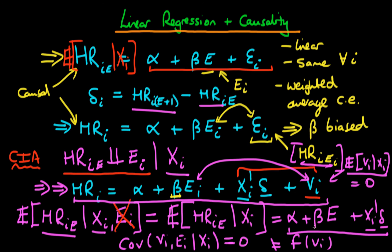To reiterate: beta is the average causal effect because it is the same beta that appears in the potential outcomes relationship when taking the expectation of HR_I(E). This equivalence between the beta in the regression and the beta in the potential outcomes equation is what allows us to estimate the average causal effect — since HR_I(E+1) minus HR_I(E) yields the causal effect directly.